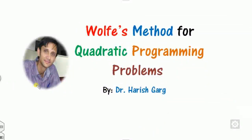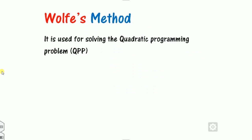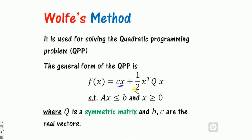Welcome to the next lecture on non-linear programming problems. In this lecture I consider one particular type of non-linear programming called quadratic programming, and the method we discuss to solve it is the Wolf method. The Wolf method is used for solving the quadratic programming problem. A quadratic programming problem has a function with a linear part plus a quadratic part, subject to some linear constraints.